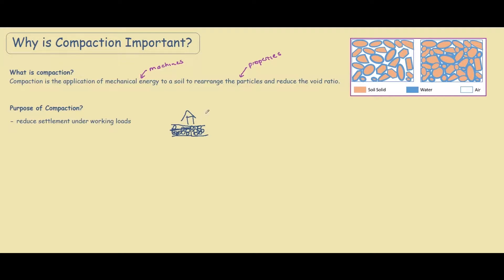What we want to do in construction is to make sure that all the soil is compacted before putting the house on top of it to avoid differential settlement. Another reason we do compaction of soil is to increase the shear strength of the soil so that it's less susceptible to failure or sliding failure.